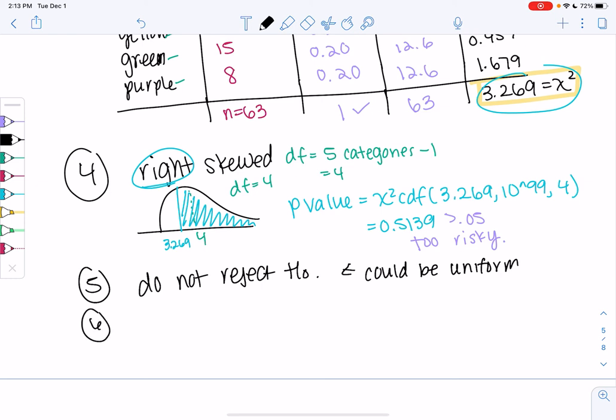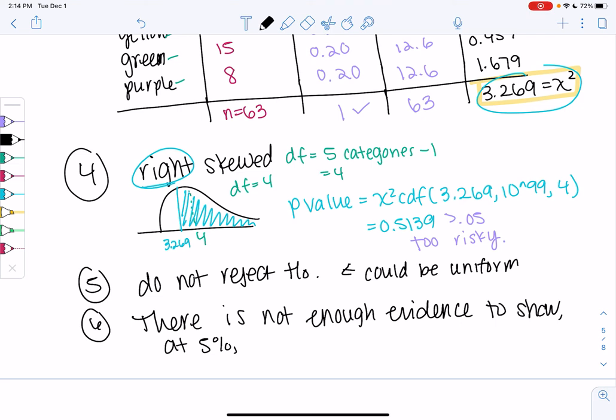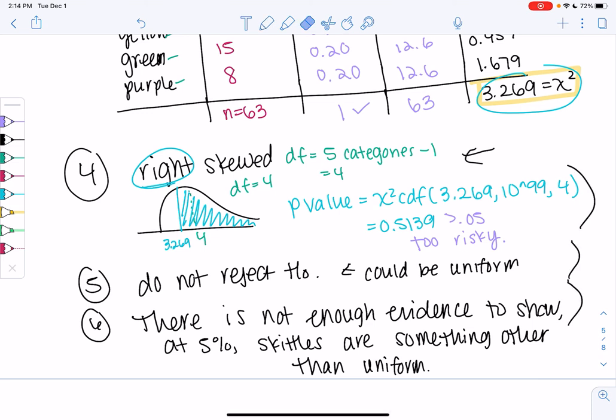We're just saying it still could be uniform. Our bag wasn't different enough. So there's not enough evidence to show at 5% that Skittles are something other than uniform. Our bag of Skittles was close enough that it's possible. And that's the hypothesis test. So concept-wise, it's the same. It's just the middle steps get a little messier because it's a little bit harder. Once you add more categories, it's more work. But once you get to step 4, it should start to feel very repetitive. And that's Goodness of Fit.